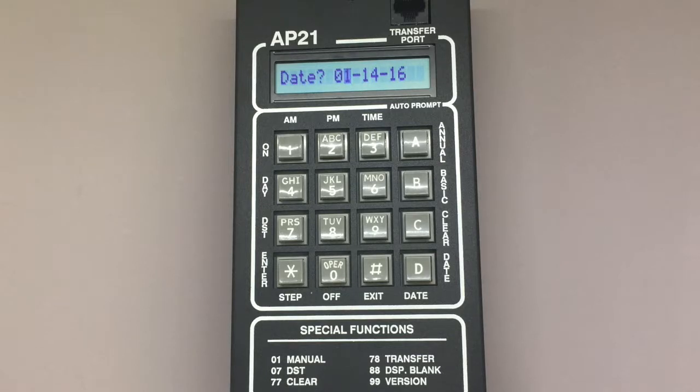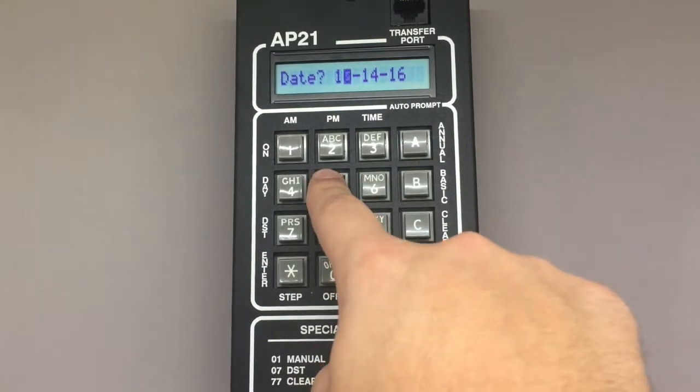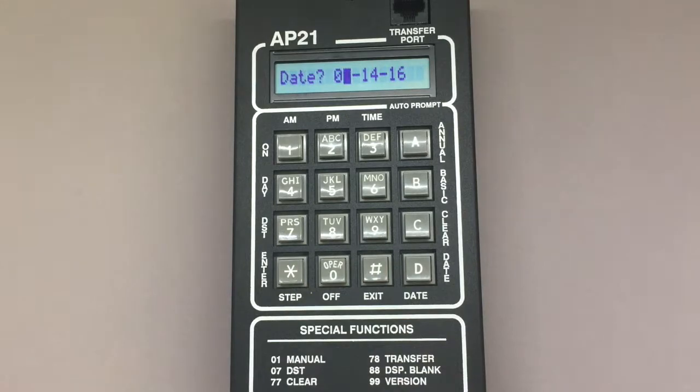Using the AP21 keypad, type in the current month. Right now it's May 8, 2017, so I'm going to press 05 for May. Make sure to use a zero before single digit months.